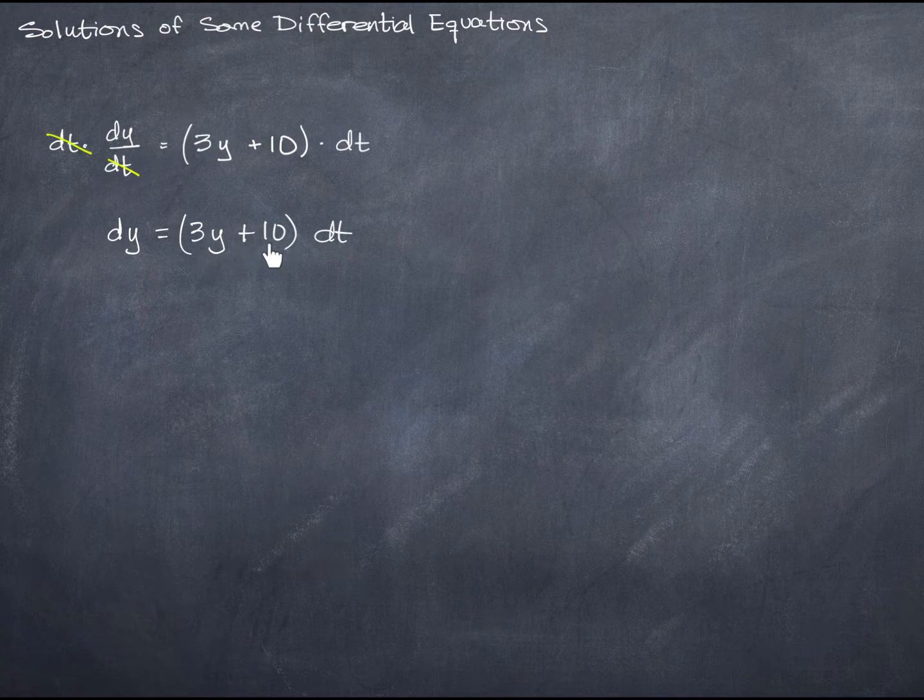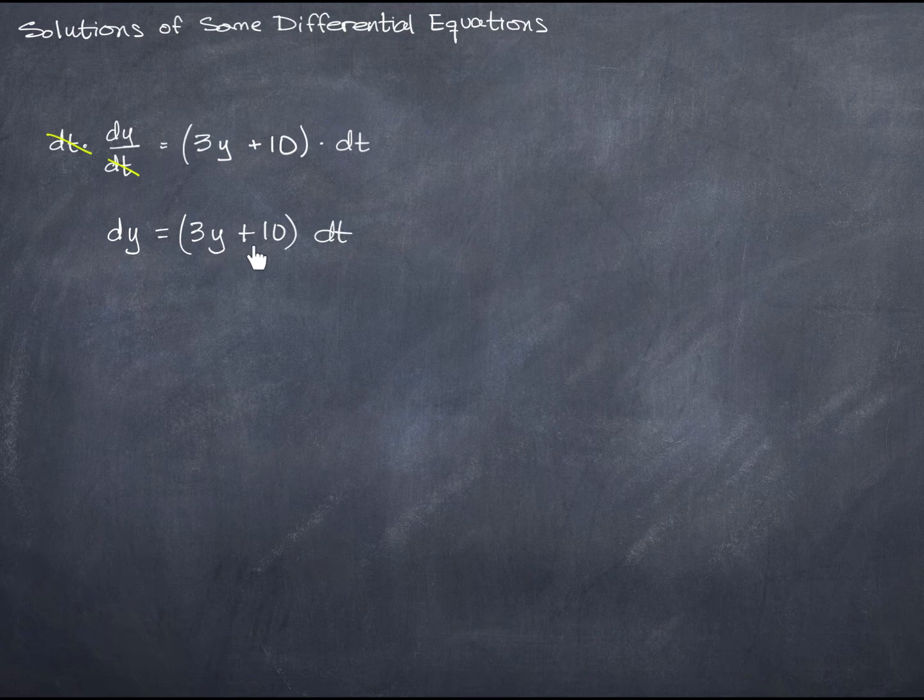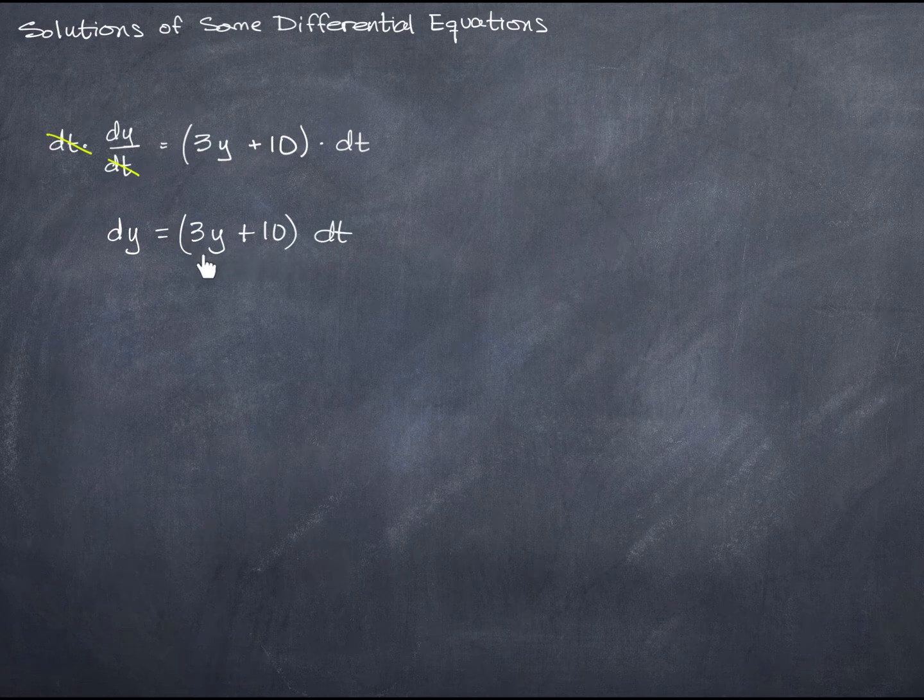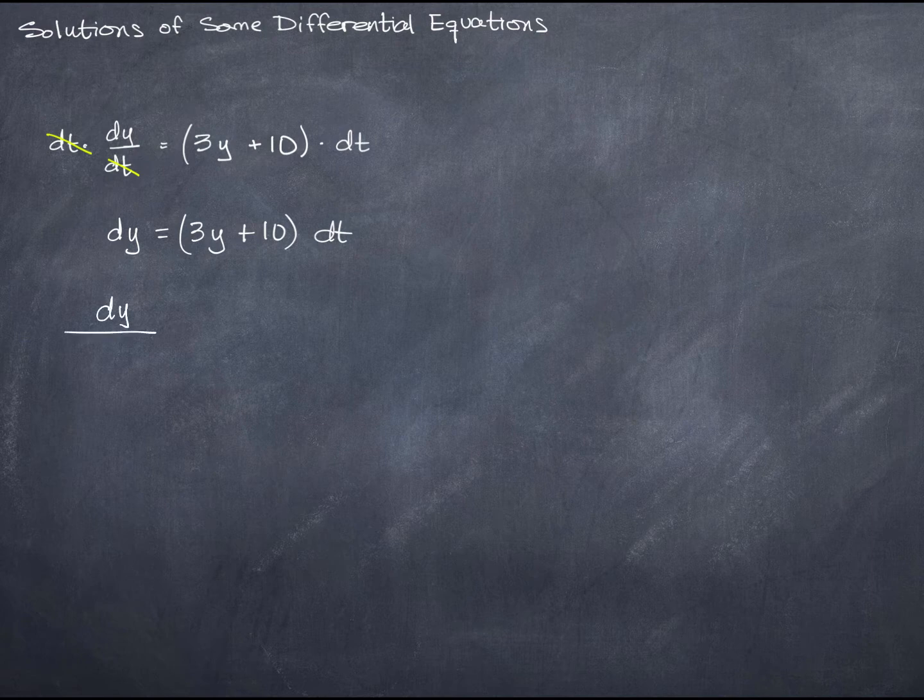And that leaves me with the equation dy equals (3y + 10) dt. Now I have an expression. There's a constant here, but this expression is explicitly in terms of y. There are no t's in this one, so in this expression. So I can divide both sides of my equation now by 3y plus 10.